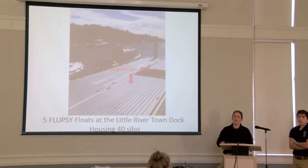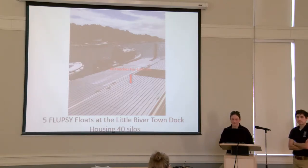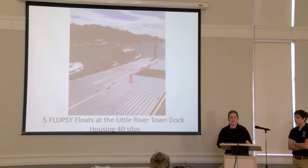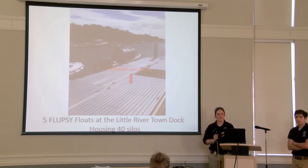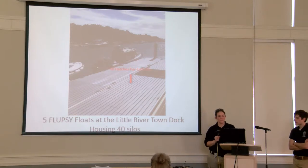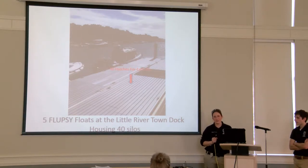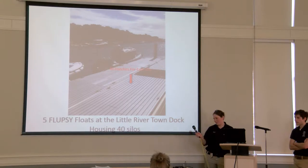We start them up in May and we probably go to October. When they're at two millimeters to about seven millimeters, they're in either the land-based tanks or the floating dock upweller. After they reach a size of about 10 to 15 millimeters, they go into bottom trays.